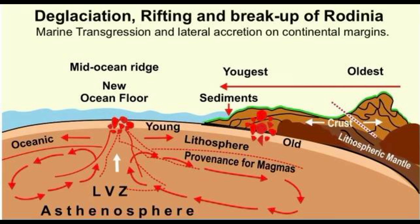The surface water of the ocean became slowly oxygenated and warmer, while at depth the milieu remained cool and anoxic. The surface ocean waters also became alkaline, while the deeper water remained less alkaline and more acidic. The profiles of temperature, dissolved oxygen, pH, and salinity were gradually established, quite similar to those in present-day oceans.